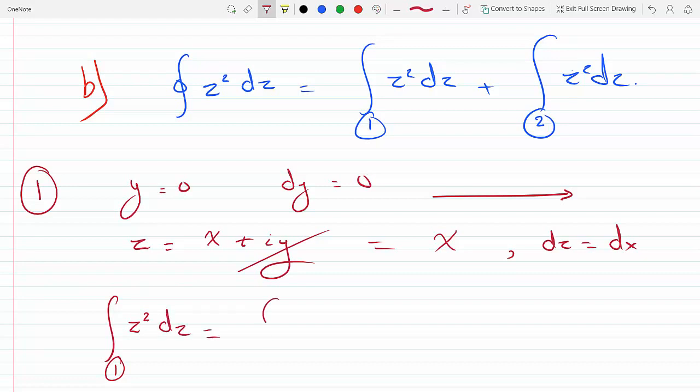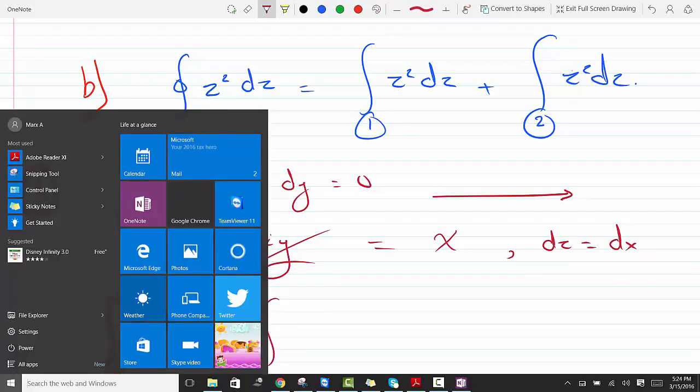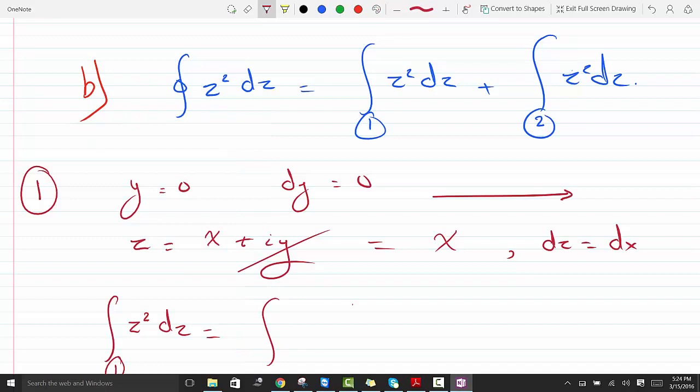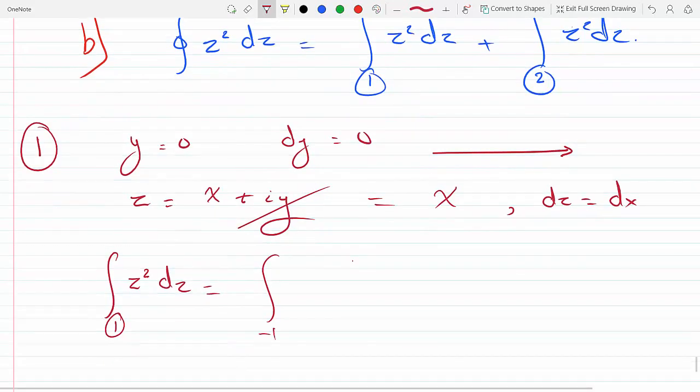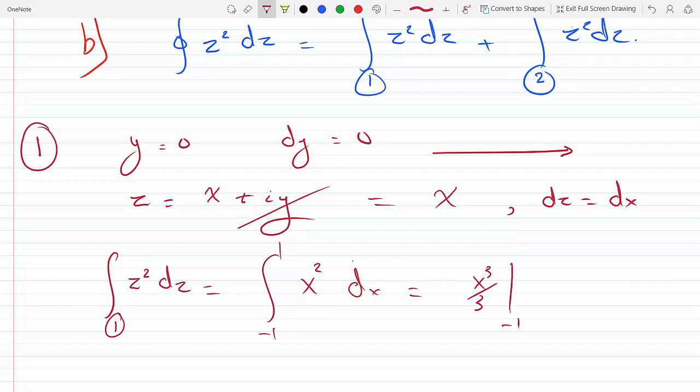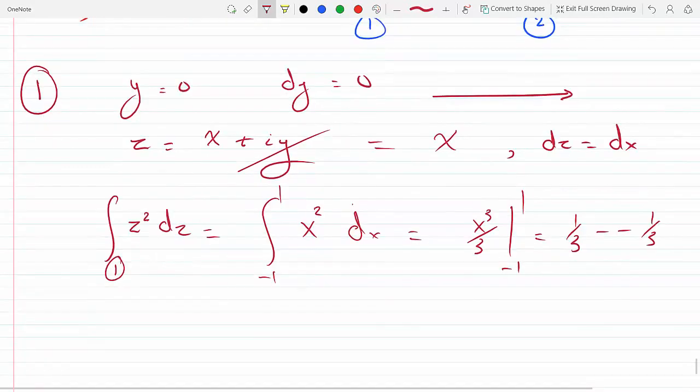So path 1 of z squared dz is going from minus 1 to 1. z is x, so this is x squared, and dz is dx. If we integrate that, we get x cubed over 3 from minus 1 to 1, that's one-third minus minus one-third, so we get two-thirds.